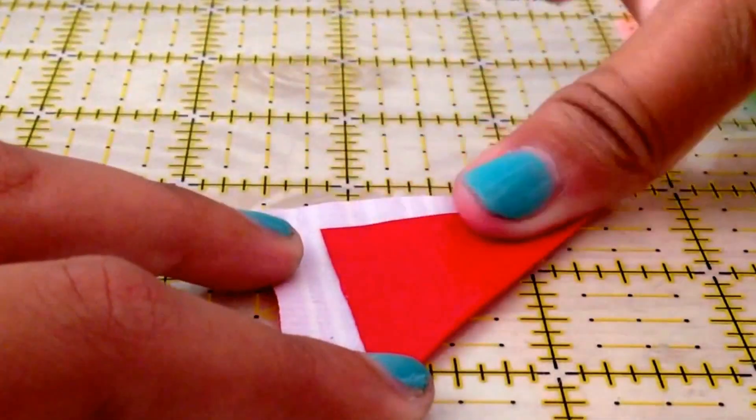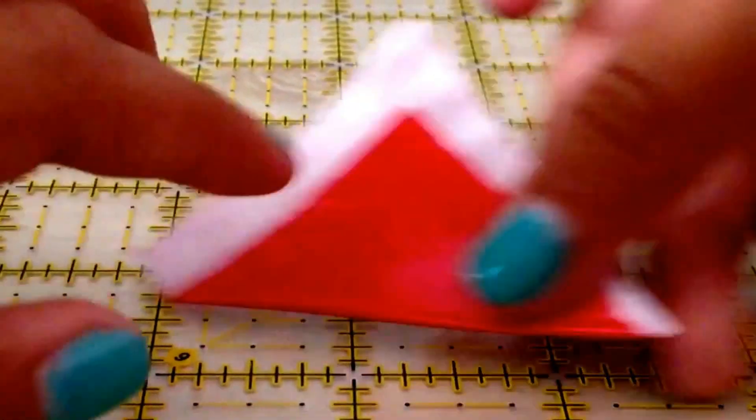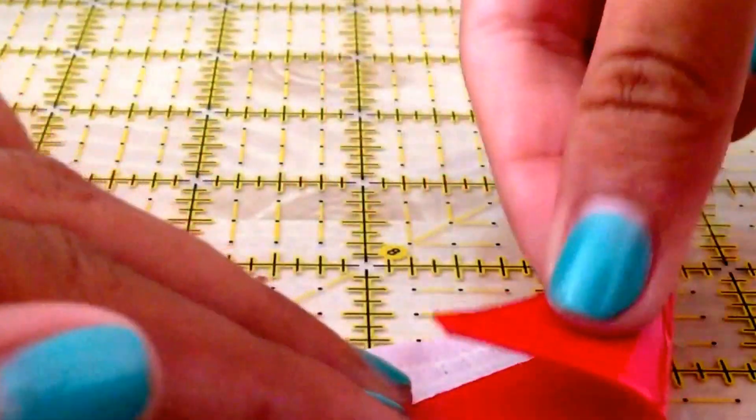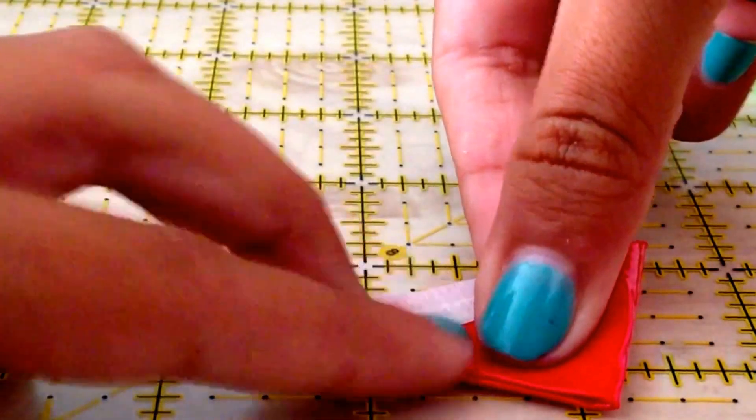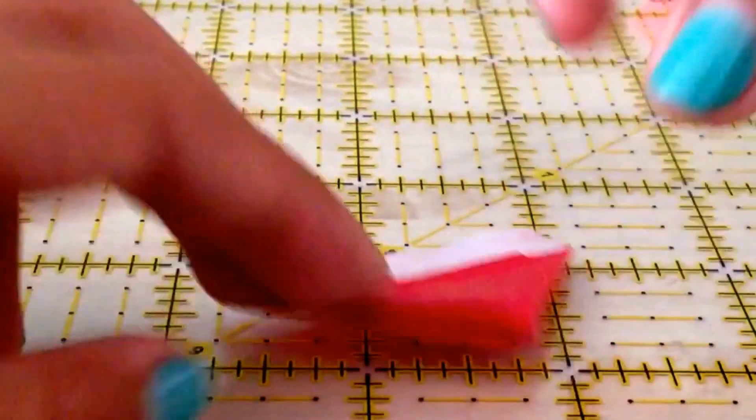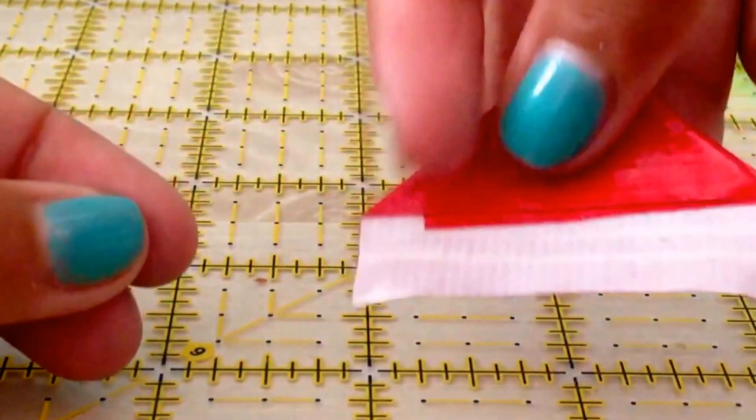And then crease the side, and then take one of the sides and put it across like this. Now, you should have a triangle.